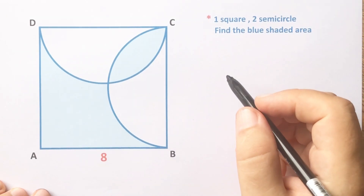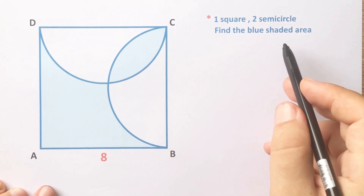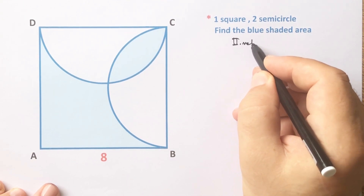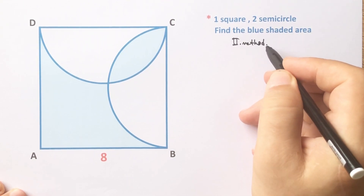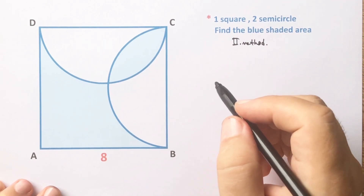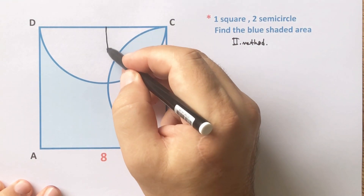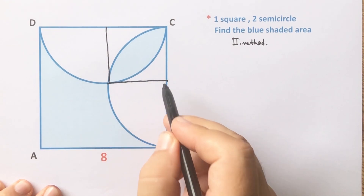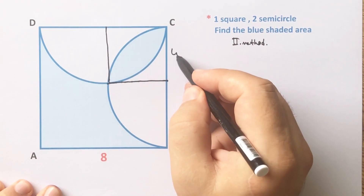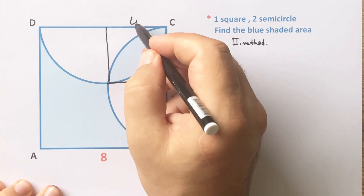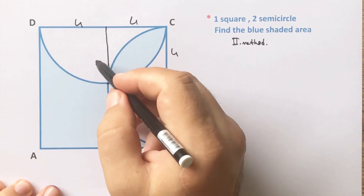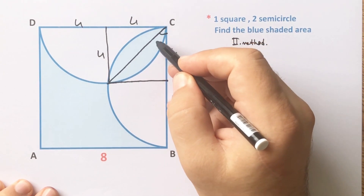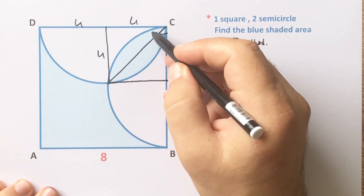Now we will calculate the area using a second method. The second method is easier. Let's draw the perpendicular line again — these are 4 units and these are also 4 units. Let's connect here — this is 45 degrees, because of the square.